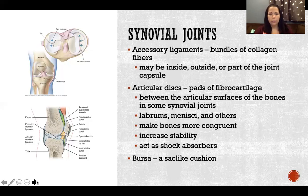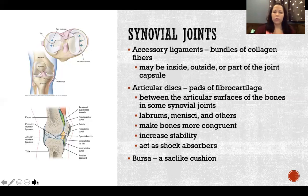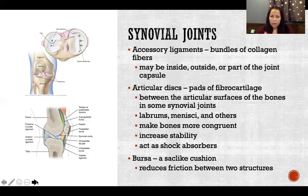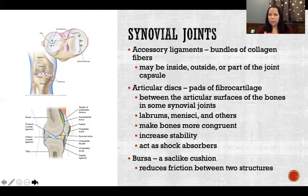A bursa is a sac-like cushion — a small membranous pocket that secretes fluid into its interior to create a fluid cushion. Their job is to reduce friction between two structures. We have bursae between tendons and bones, tendons and muscle, tendon and tendon, and skin and bone — essentially anywhere two structures rub against each other to prevent chronic inflammation and injury.